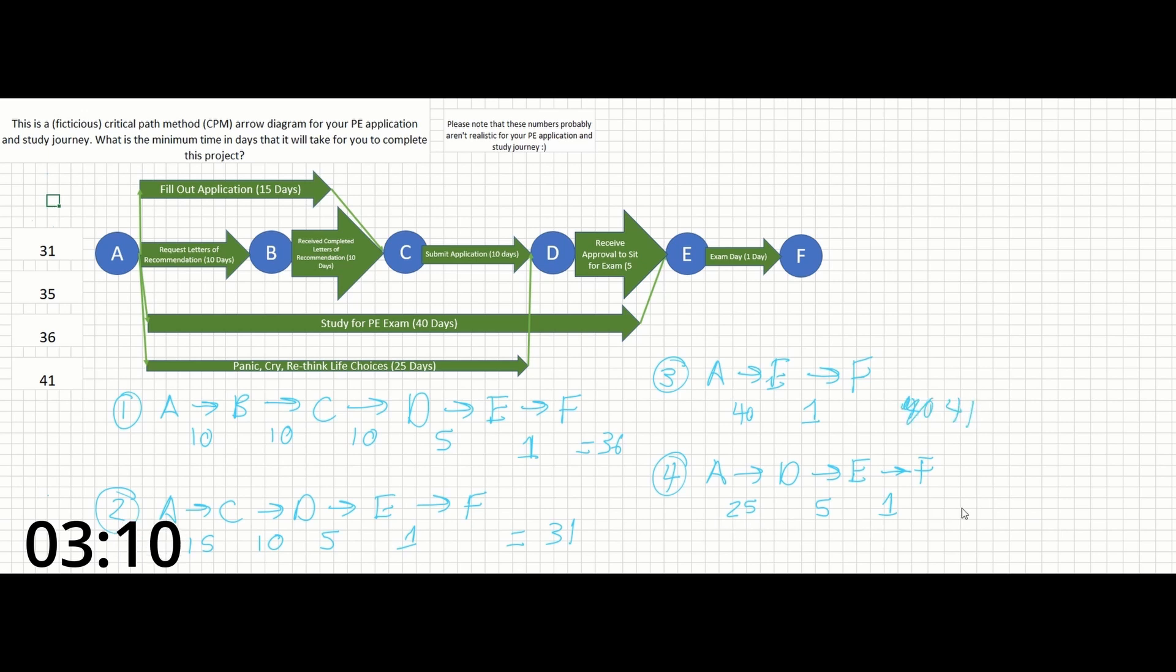So our critical path, aka the shortest amount of time to complete the project, will be the longest or the largest number. So option three here of 41 days will be our correct answer.